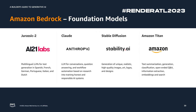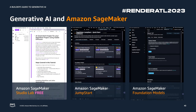Amazon Bedrock is a new service coming out that will give customers access to a bunch of different foundation models. We have Stability AI's Stable Diffusion, Anthropic, AI21 Labs, and Amazon's own foundation model called Amazon Titan. Right now there are things you can do to start building today. Amazon SageMaker Studio Lab is free — no credit card needed — it spins up a Jupyter notebook for you to start testing things out. Amazon SageMaker JumpStart has foundation models you can play with today, including Stable Diffusion and Flan-T5. And SageMaker also lets you deploy foundation models to an endpoint without a Jupyter notebook. Many ways to get in there, start building, and try things out.